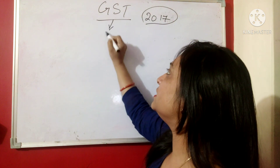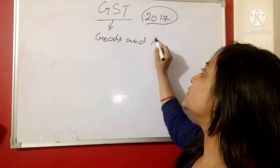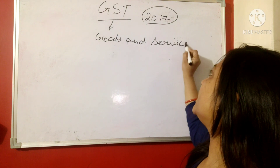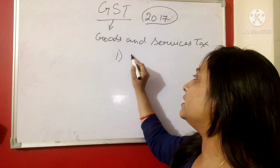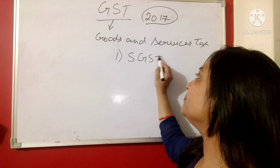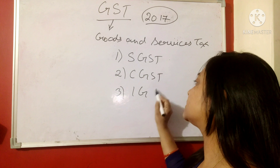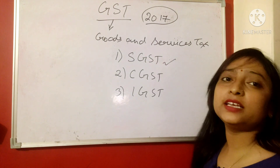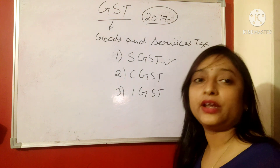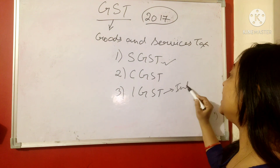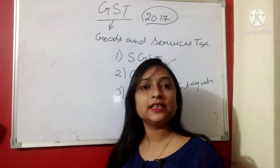What is the full form of GST? GST means Goods and Services Tax. Now, GST is of three types: the first one is SGST, then we have CGST, then we have IGST. SGST is on the state level, CGST is on the central level, and IGST is the Integrated Tax.